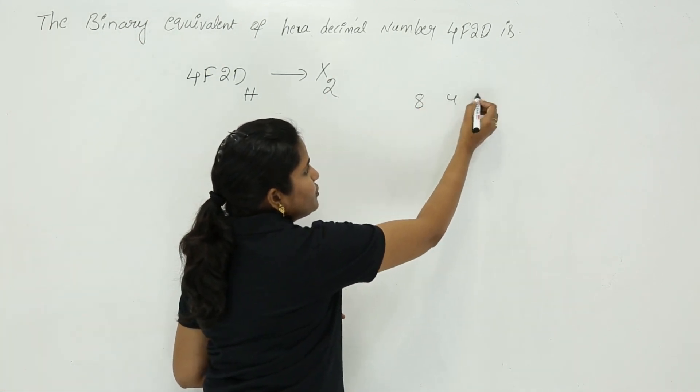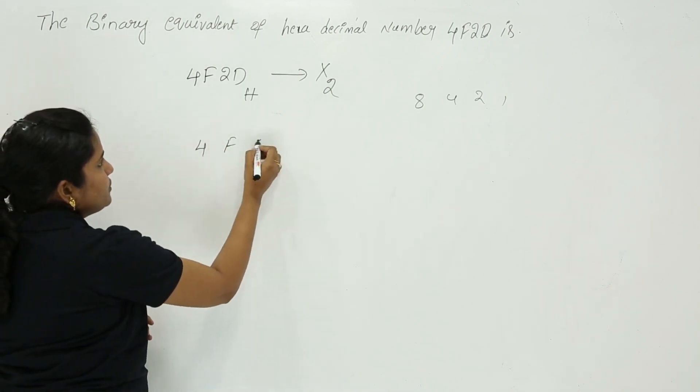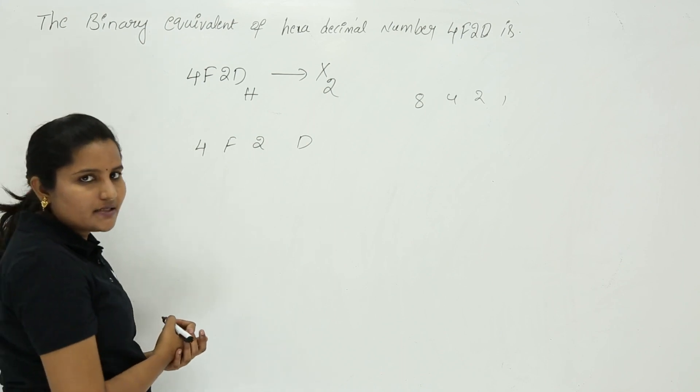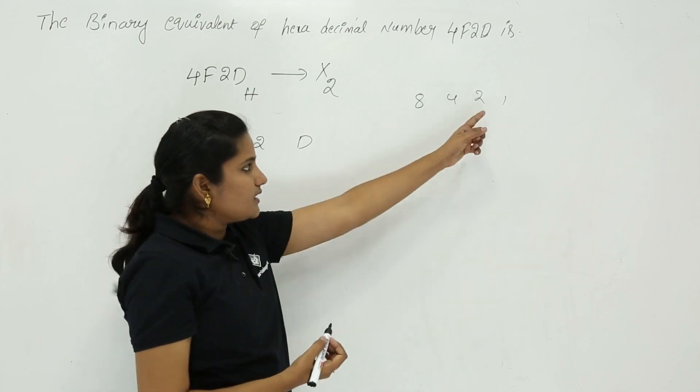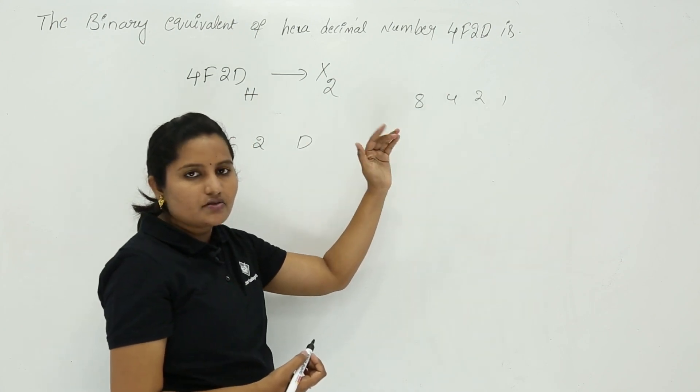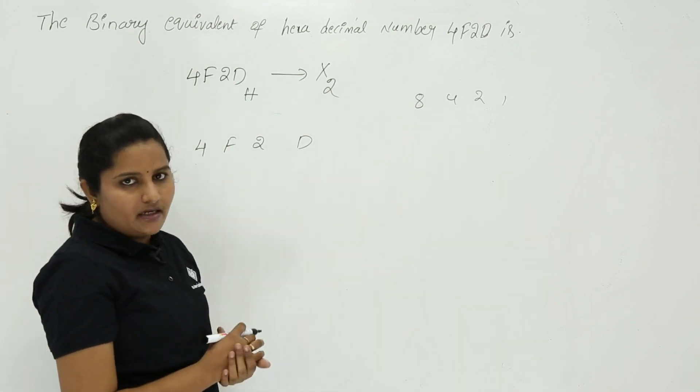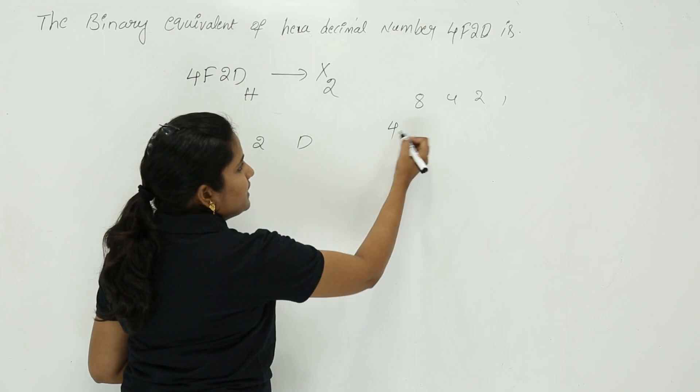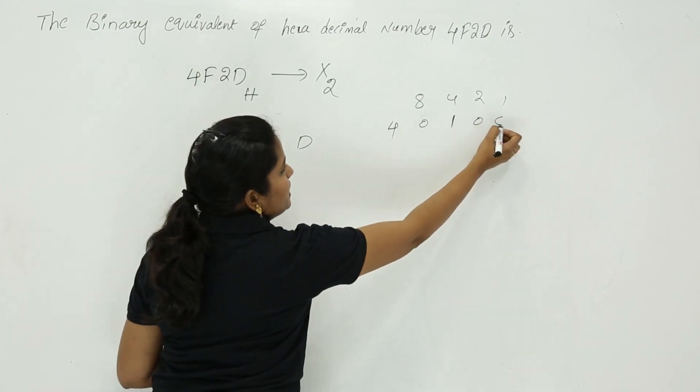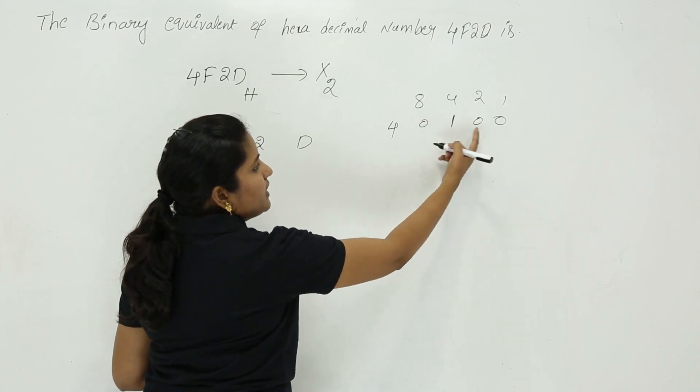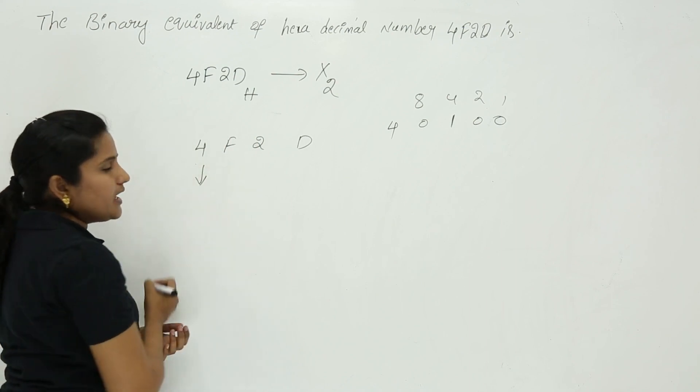You write 4F2D, the given hexadecimal number. To get 4, what binary digits do you need? Using the 8-4-2-1 reference, for 4, only the 4 place is needed; remaining places are 0. So 0100 is the binary for 4. You can directly write that binary value under 4.